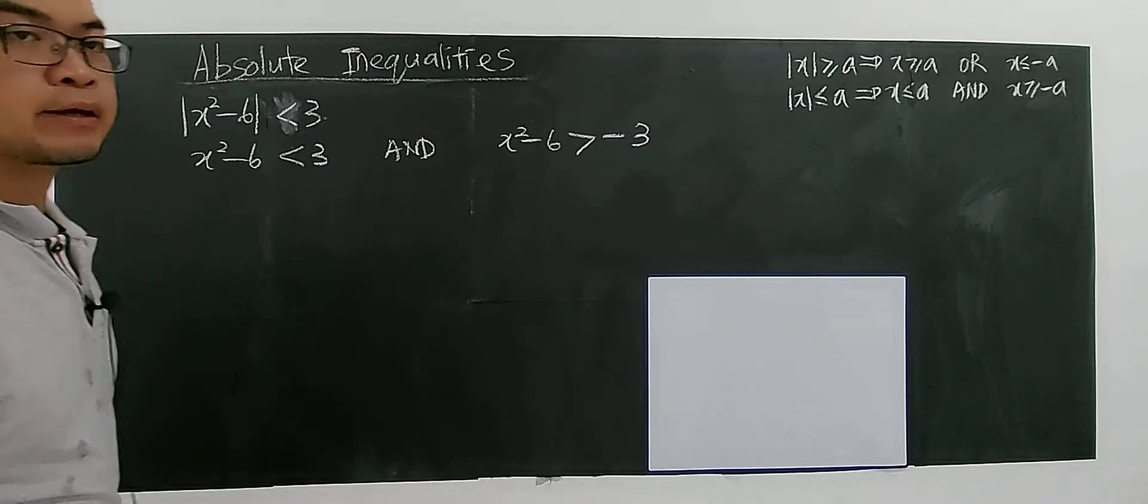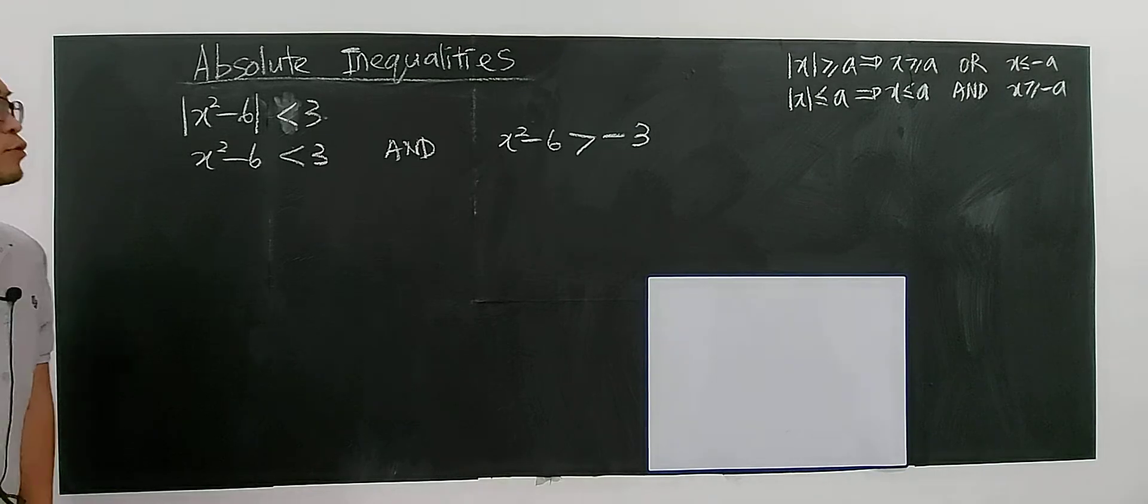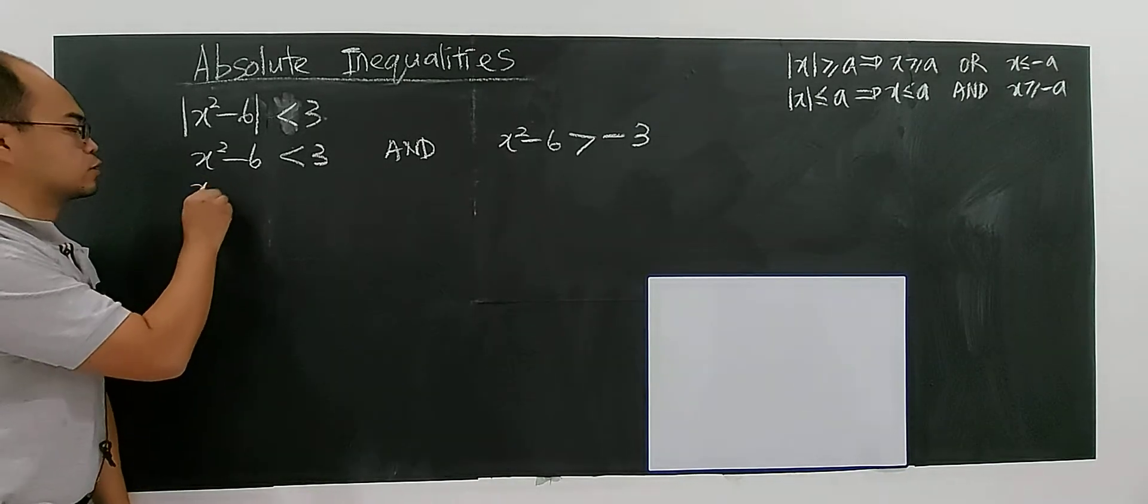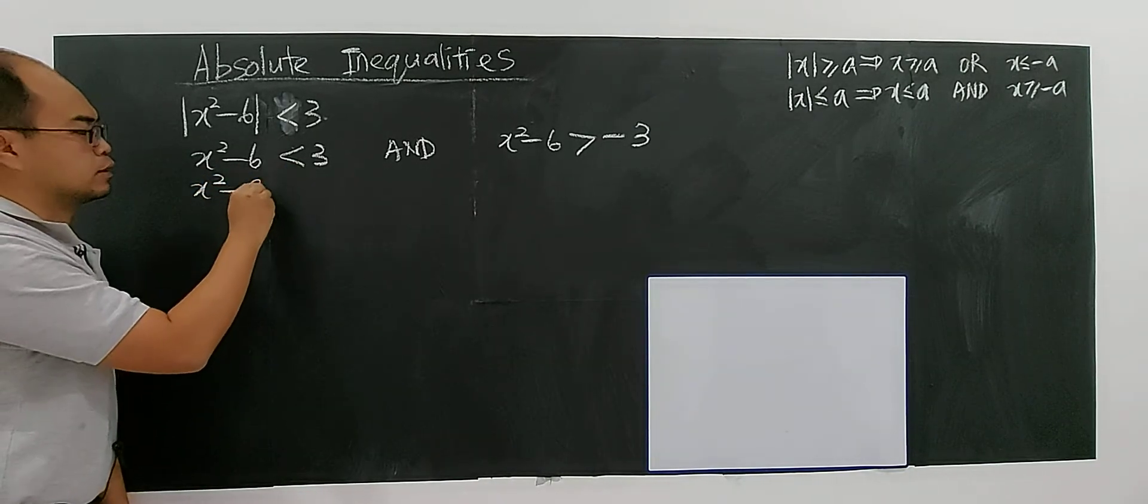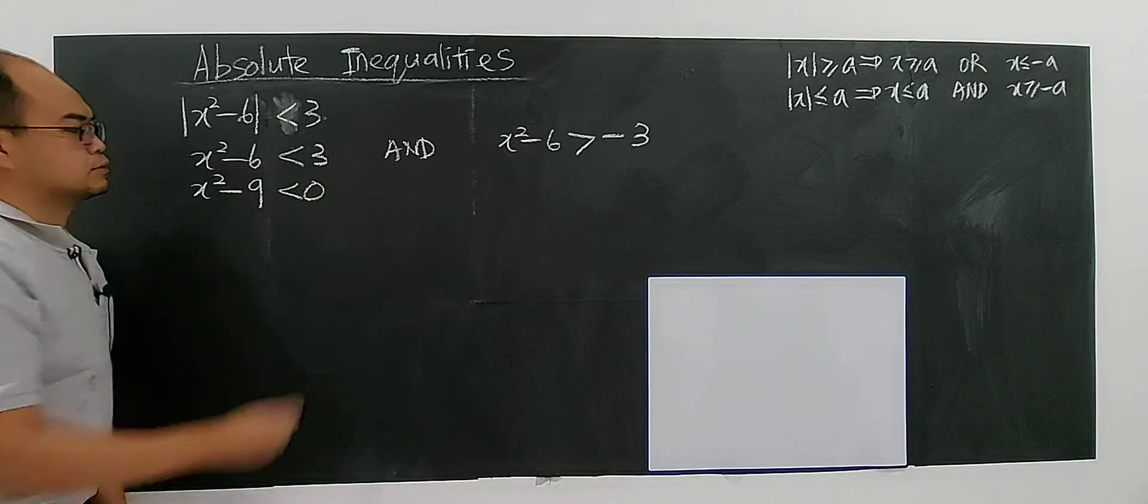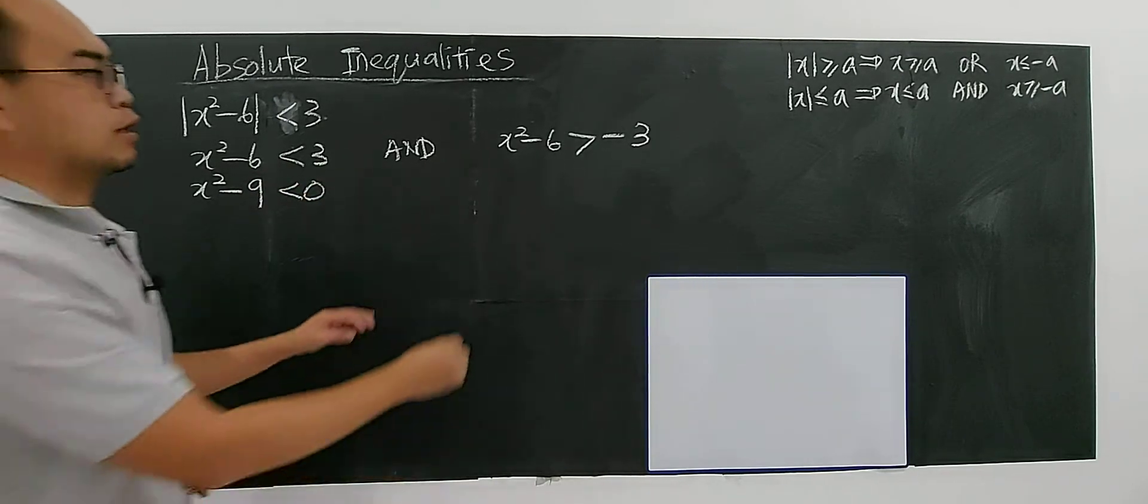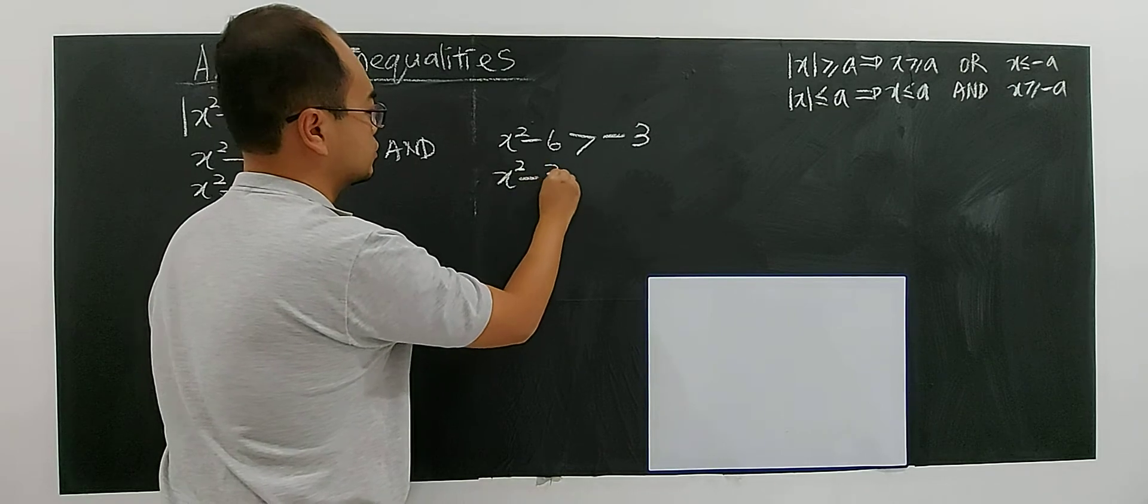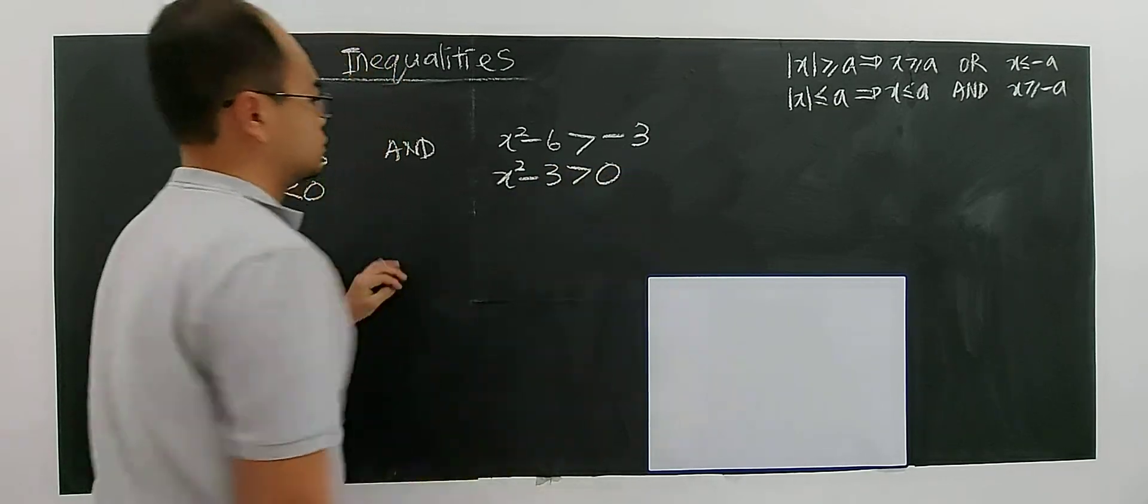Make sure you apply the correct definition, right? Basic definition. So now you have x to the power of 2 minus with 9 less than 0, and for this you have x to the power of 2 minus 3 greater than 0.